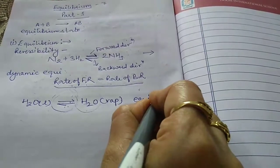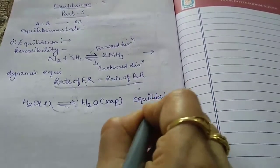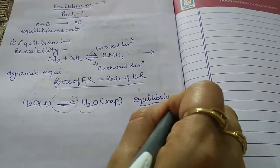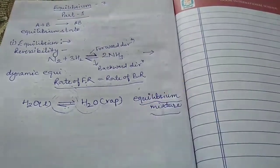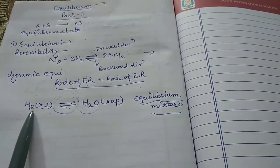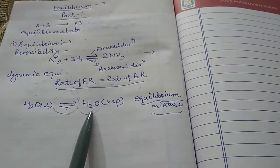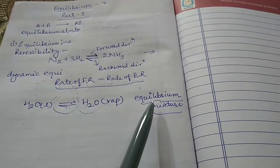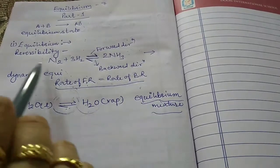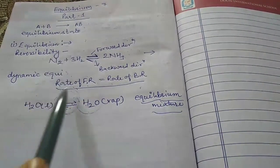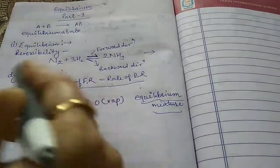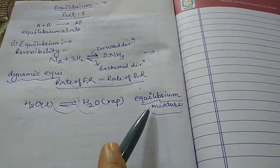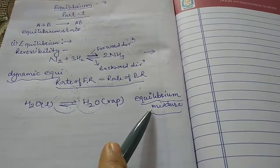The concentration of reactants and the concentration of products at the time of equilibrium is known as the equilibrium mixture. So the three terms are: equilibrium, reversibility, and dynamic equilibrium — and the third one is the equilibrium mixture.